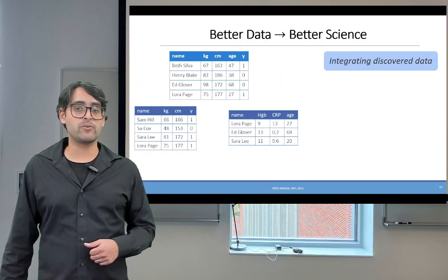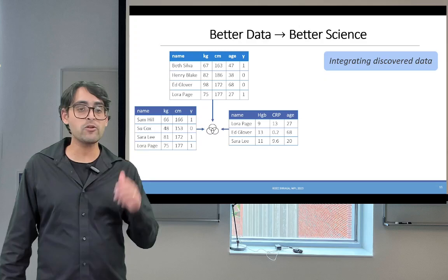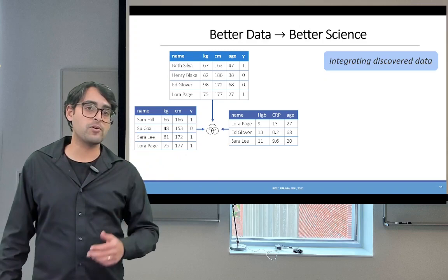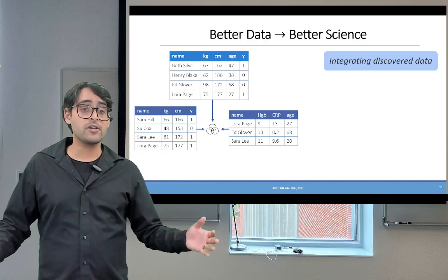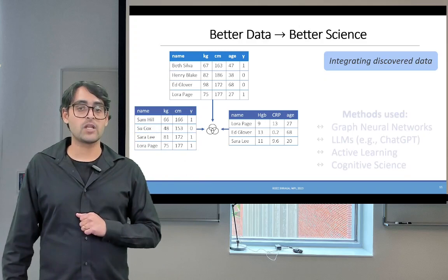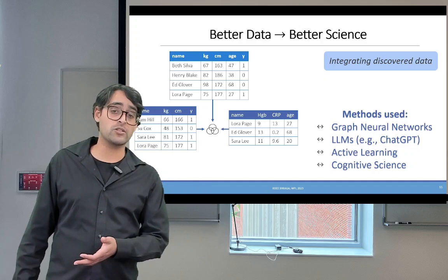The second pillar of my research looks at how to integrate these pieces of information together. In other words, we try to find efficient and automated ways to combine these pieces of information. For example, this scientist data set and additional data set that we discovered together to come up with one efficient combined view of the data set. The methods that we use for this research range from graph neural networks and large language models, such as ChatGPT,